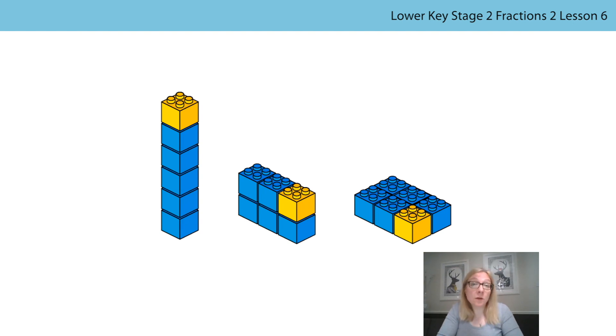When thinking about what's the same, you may have said all the models have six bricks, that the volume of models are all equal, that all the models have one yellow brick, and you may even have said that the same fraction of one-sixth is yellow in each of the models. All of those things are true.